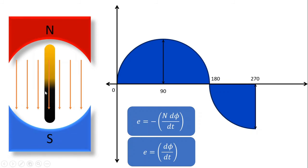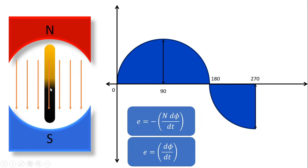Initially the yellow portion of the conductor is towards the S side and the black portion is towards the N side. Now the yellow portion is towards the N side and the black is towards the S side. So the induced EMF in this conductor reverses, and that is why we are getting a reversed output voltage on the output side.